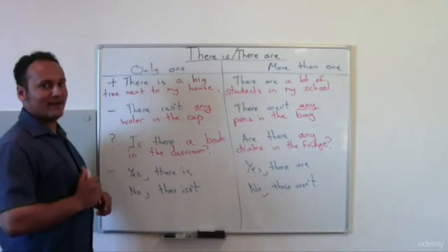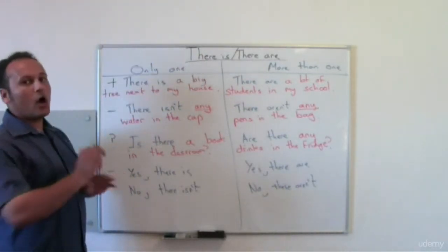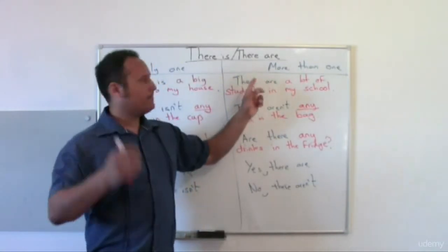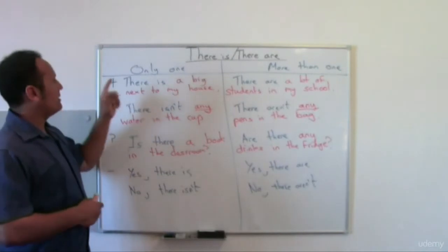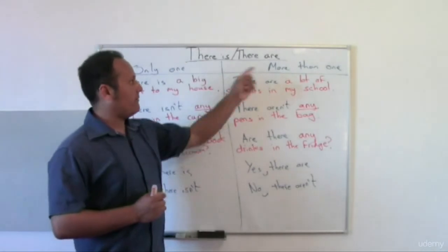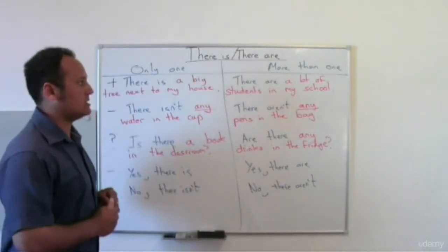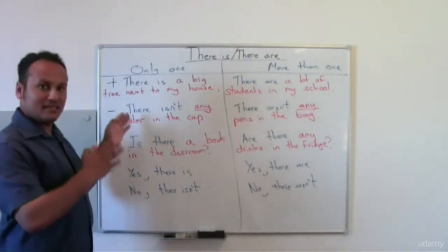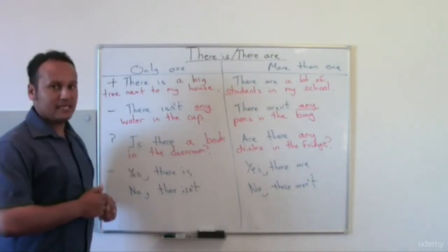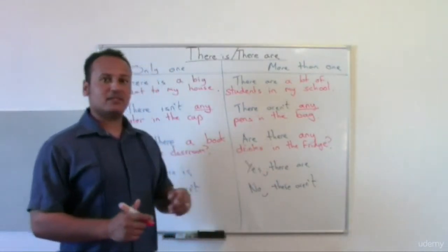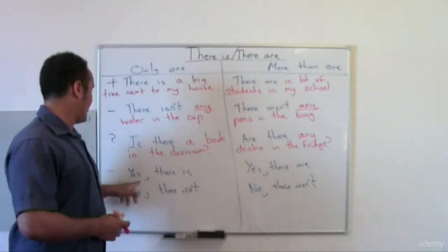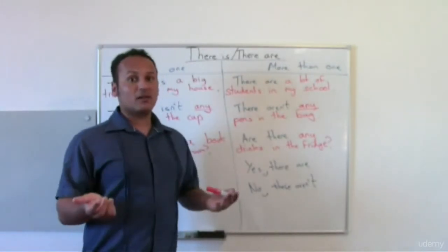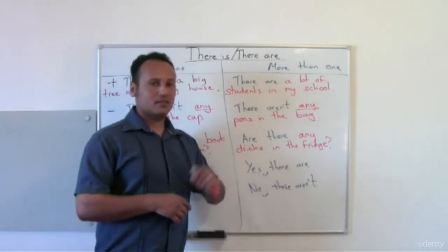Let's recap. 'There is' is for only one; 'there are' is for more than one. Positive: 'There is a big tree next to my house.' / 'There are a lot of students in my school.' Negative: 'There isn't any water in the cup.' / 'There aren't any pens in the bag.' Questions: 'Is there a book in the classroom?' (one) / 'Are there any drinks in the fridge?' (more than one). Answers: 'Yes, there is.' / 'No, there isn't.' / 'Yes, there are.' / 'No, there aren't.'